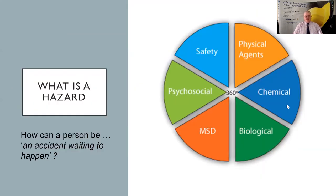What we're going to look at is what is a hazard, covering the broad safety area: the psychosocial, MSD, biological agents, chemical agents and physical agents. So this is a very broad 360 view of what we will be looking at as an audit team on site.